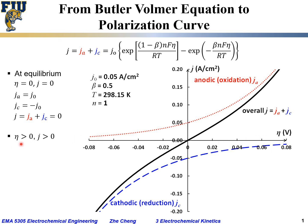When the overpotential η is greater than zero — anodic bias or anodic polarization — the overall current density is also positive, meaning the overall reaction proceeds through the anodic or oxidation process. Under anodic polarization, the anodic current magnitude is greater than the cathodic current magnitude; anodic is positive and cathodic is negative, but |Jₐ| > |Jc|, so overall we get a net positive current density.